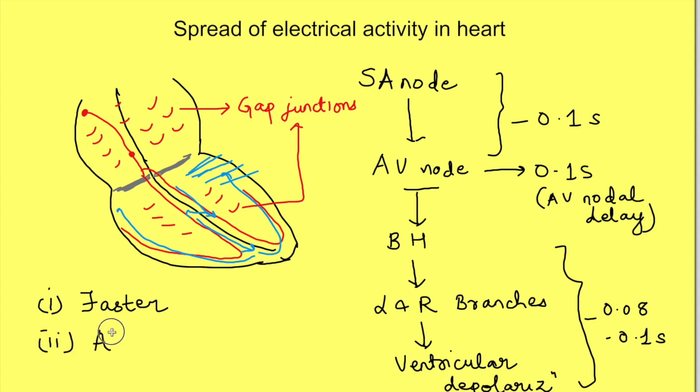Secondly, from atria to ventricles, the activity can spread only via this conduction pathway since atrial and ventricular fibers are separated by a fibrous tissue ring. This is also important physiologically because it helps in spacing the depolarization of atria and ventricles.